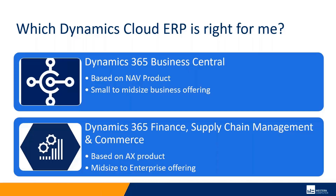Some very large companies use the AX product, but also some mid-sized ones in the 50 to 100 million revenue range use that product as well, because it may have some key functional capabilities that they need. We're going to step through the differences between these two applications mainly from a functionality standpoint, and we're happy to delve into this detail with any of you one-on-one if you would like.